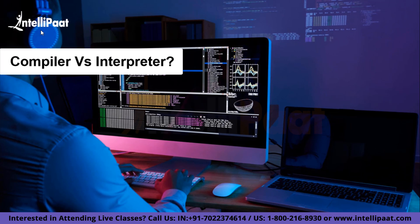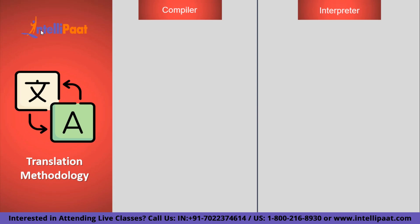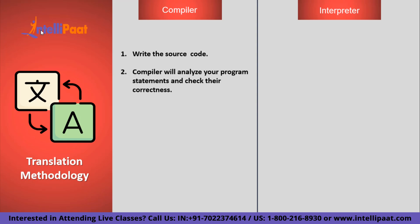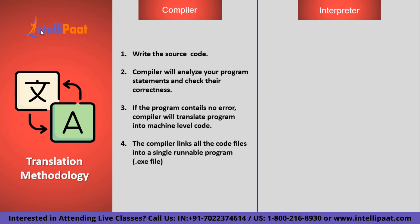Now we'll list all the differences between compilers and interpreters one by one. The first differentiating factor is the translation methodology. In compilation, you write the program, then the compiler analyzes your statements and checks their correctness. If an error is found, it throws an error message and you must correct it manually. Only then will it convert the source code into machine code, link all code files into a single runnable program known as an exe file, and finally run the program to generate output.